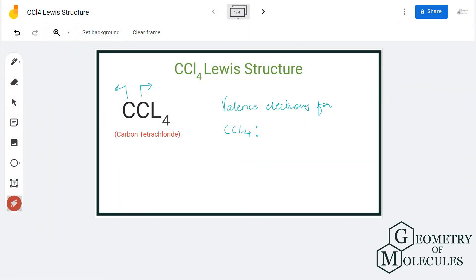Hi guys, today in this video we are going to look at the Lewis structure for CCL4. It's a chemical formula for carbon tetrachloride, and it is made up of one carbon atom and four chlorine atoms.